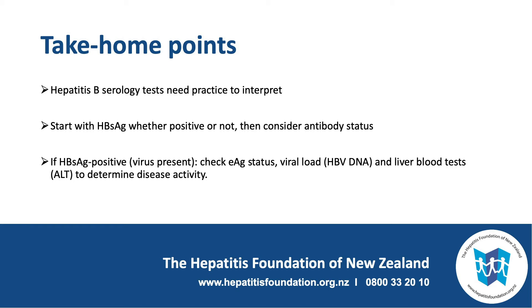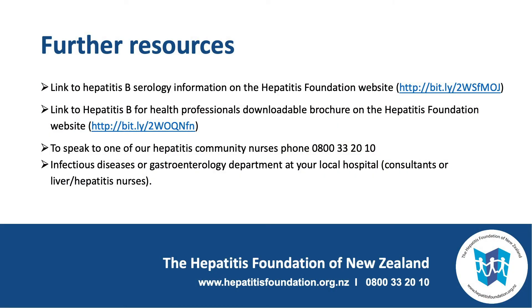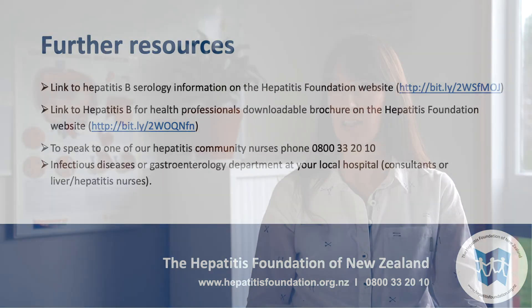In summary, hepatitis B serology blood tests take a little bit of practice to interpret but are important when providing care to your patients with hepatitis B. The first point to look at is the surface antigen to determine whether your patient has hepatitis B or not, and then subsequent serology tests to determine whether they are immune or how active their disease is. For further questions please see the Hepatitis B website and further sessions in this series for management advice.